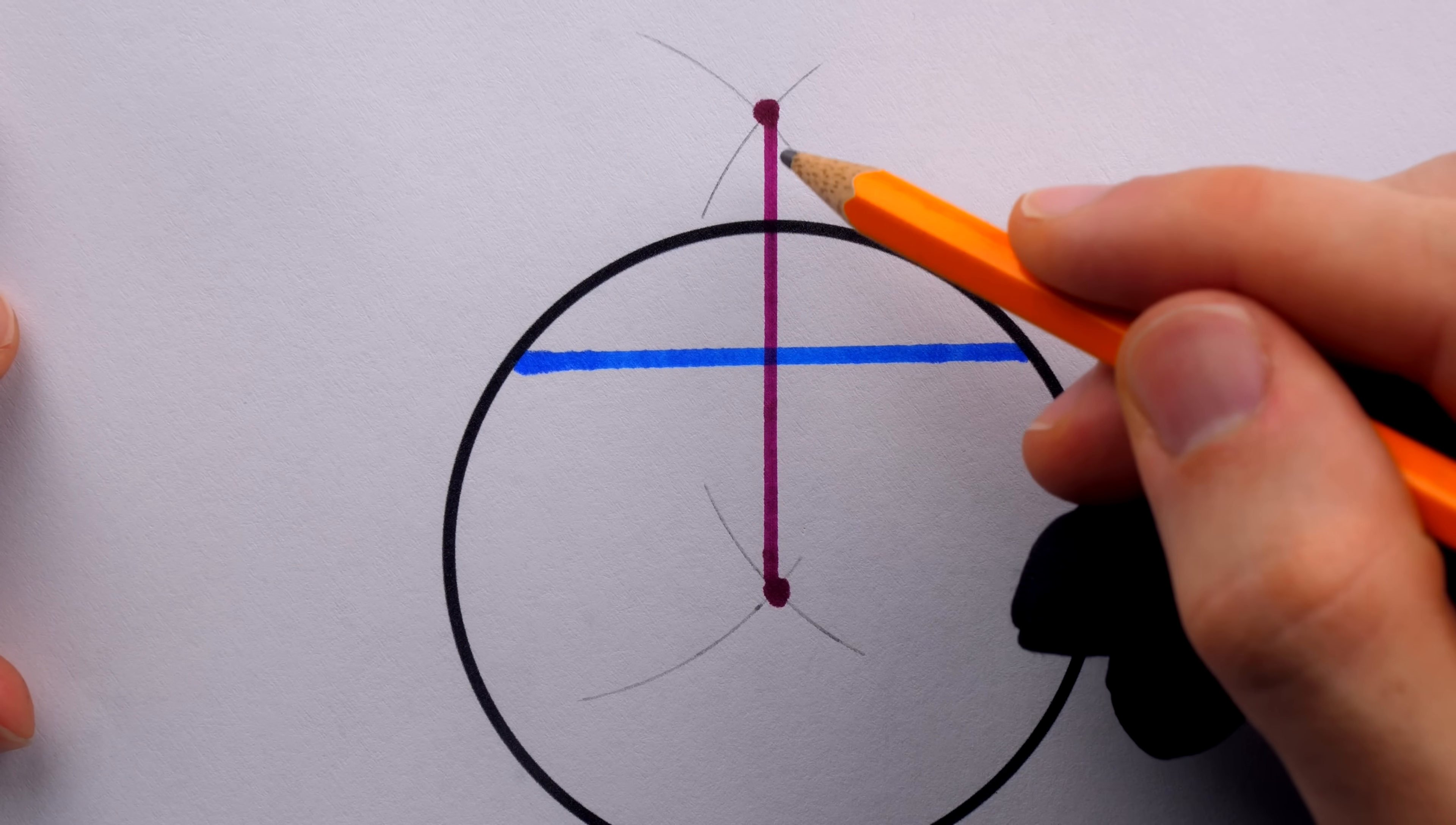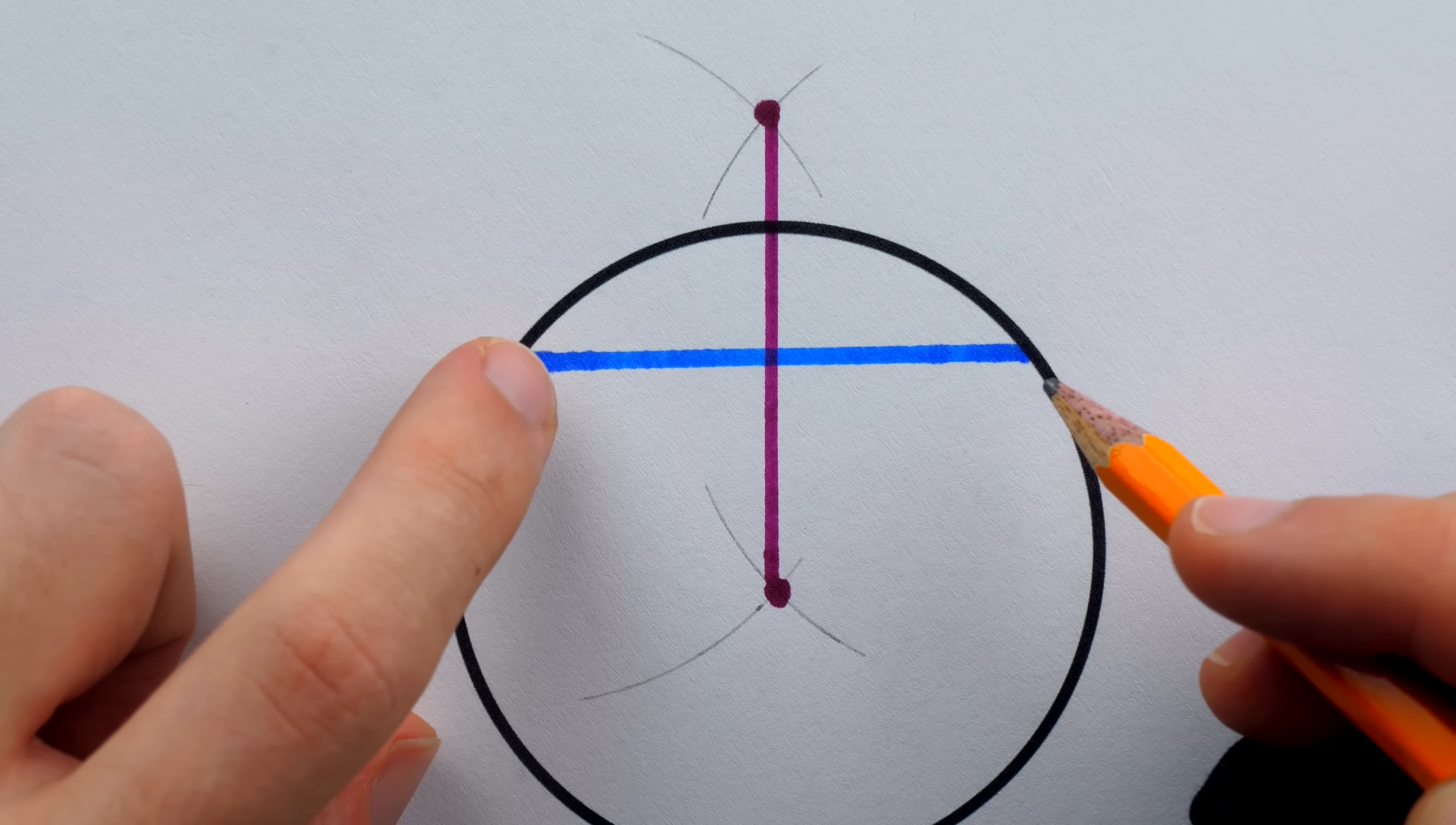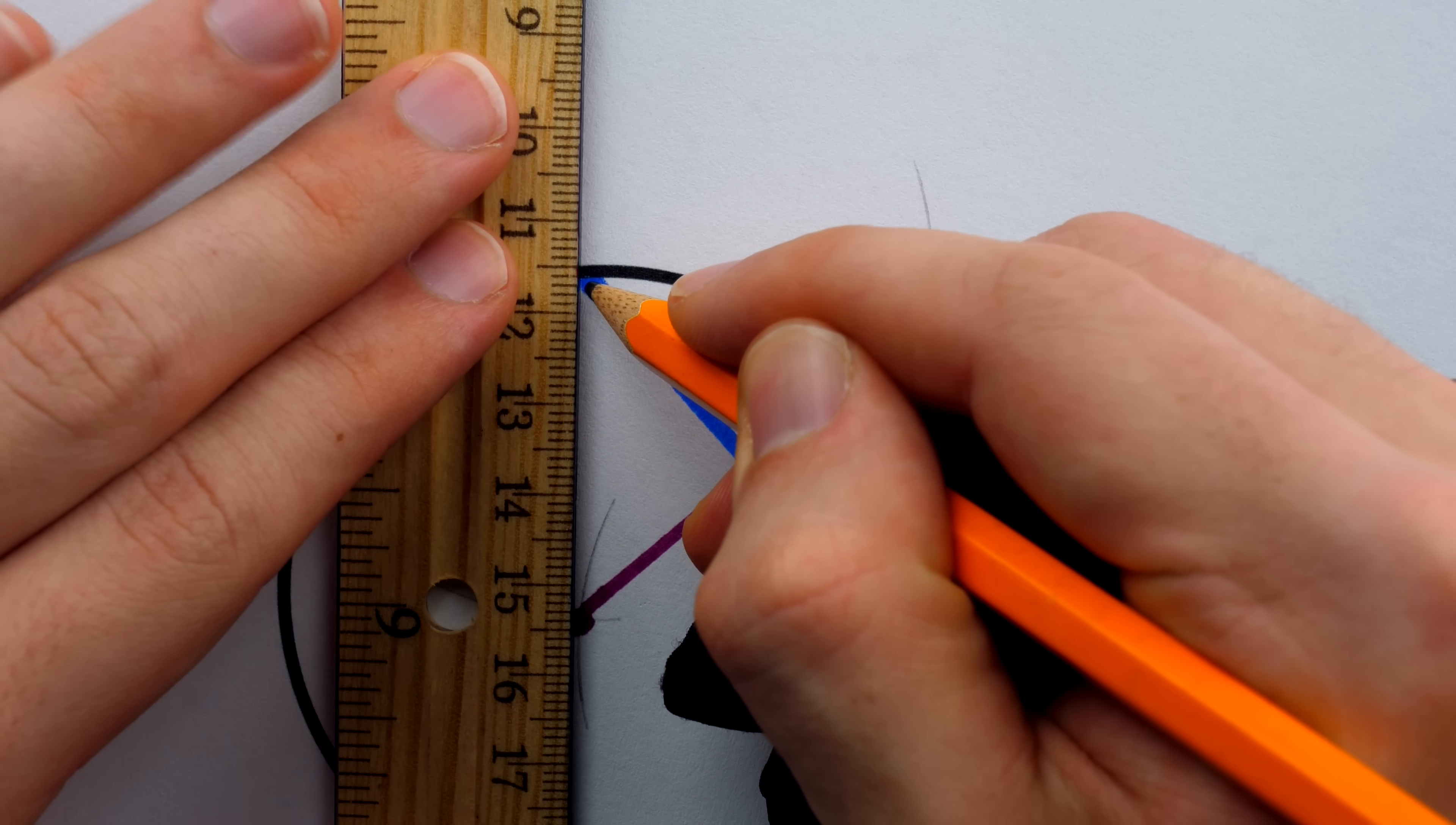Now, how do we know that this is doing what we want it to? How do we know that if we construct a segment like this, it's going to cut this chord in half at a right angle? It certainly looks like it does, but how do we know for sure? Well, let's justify that.